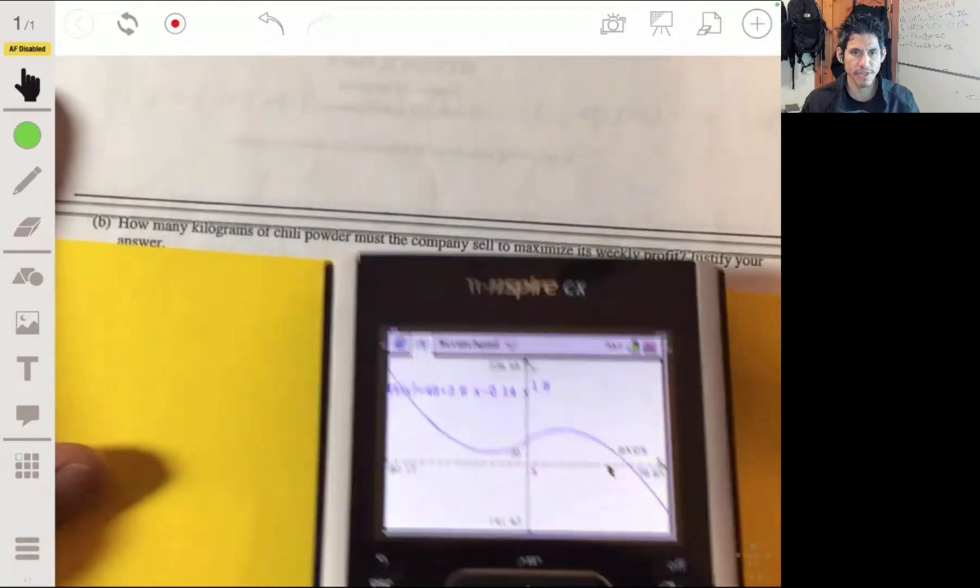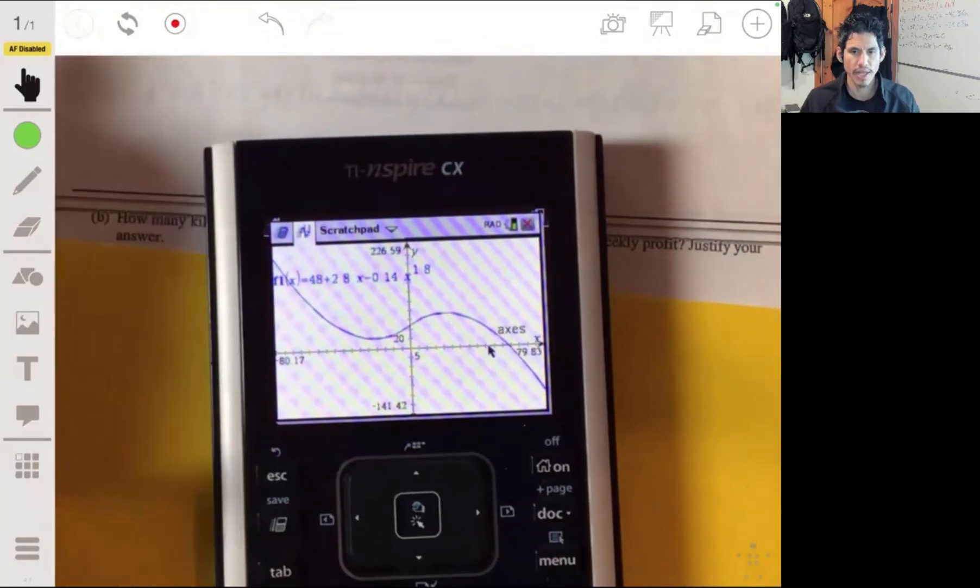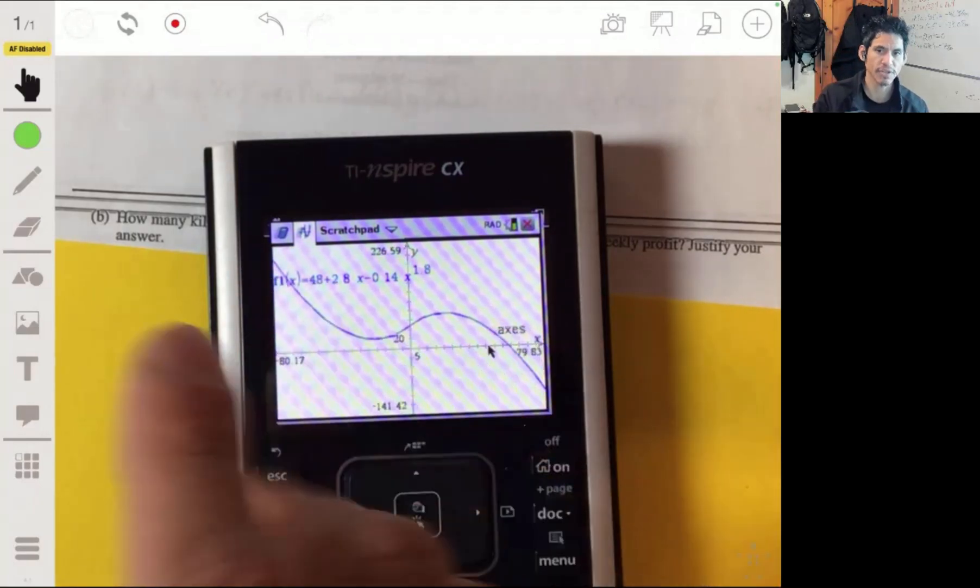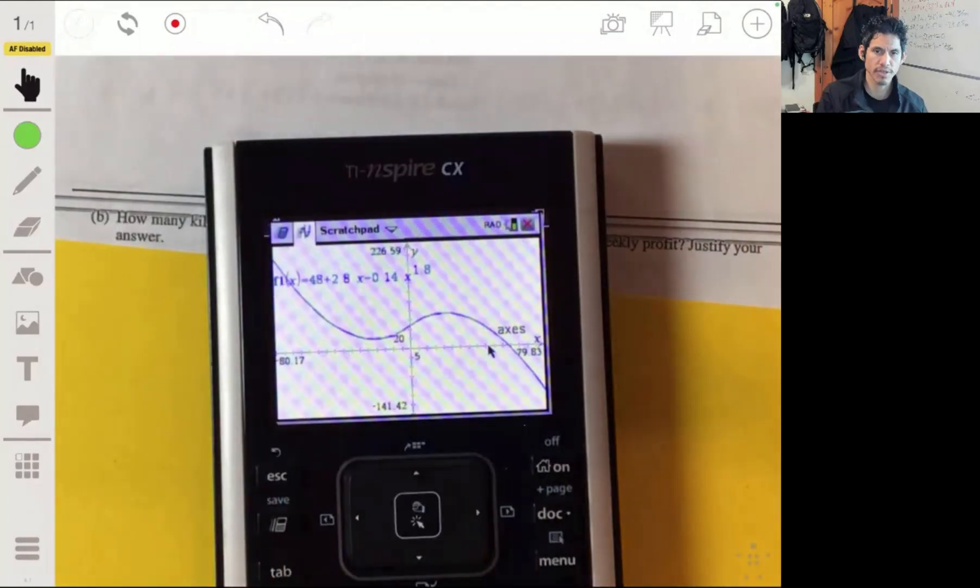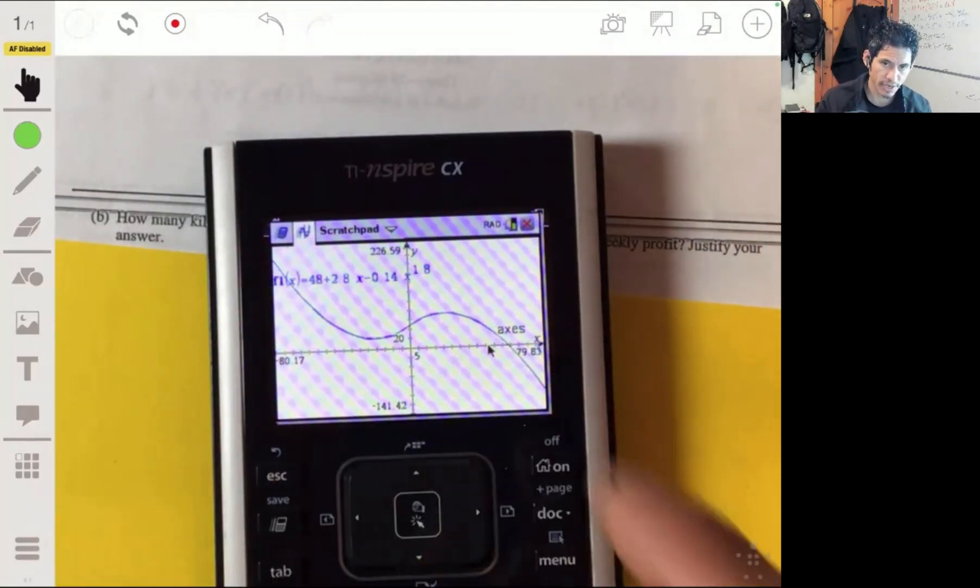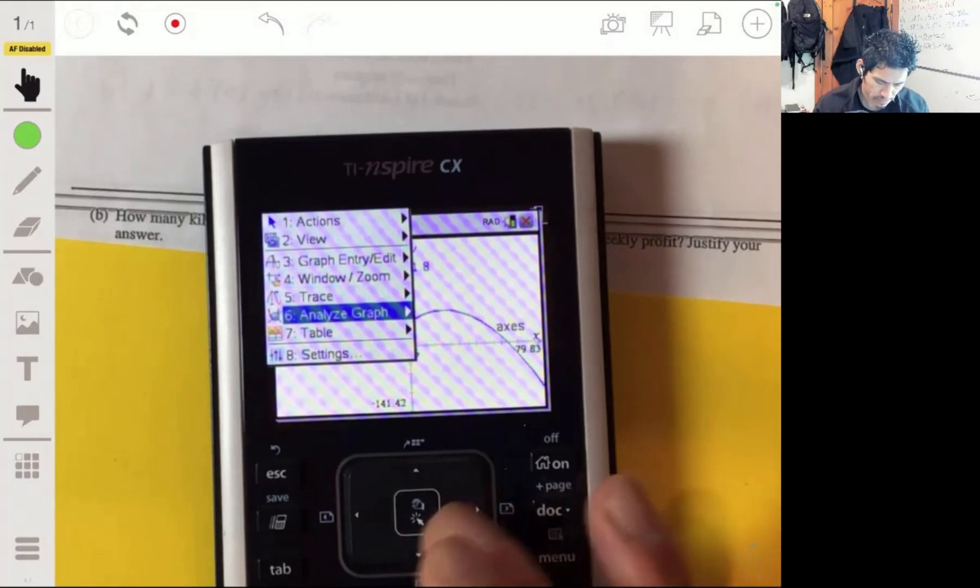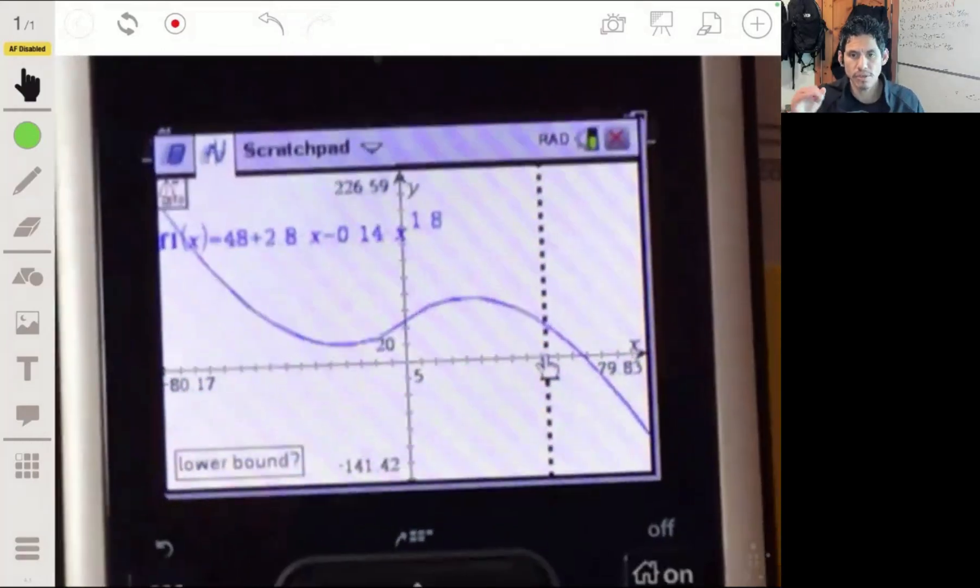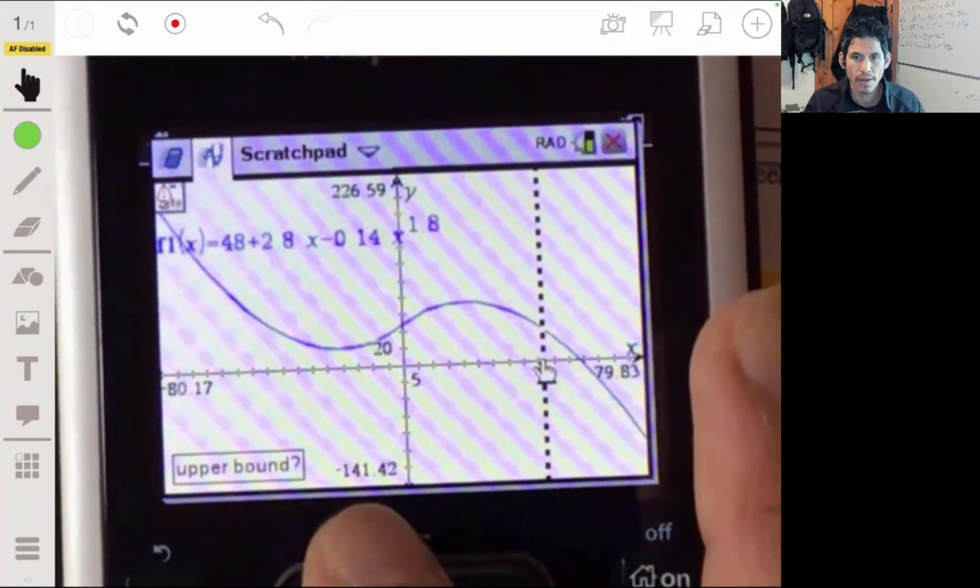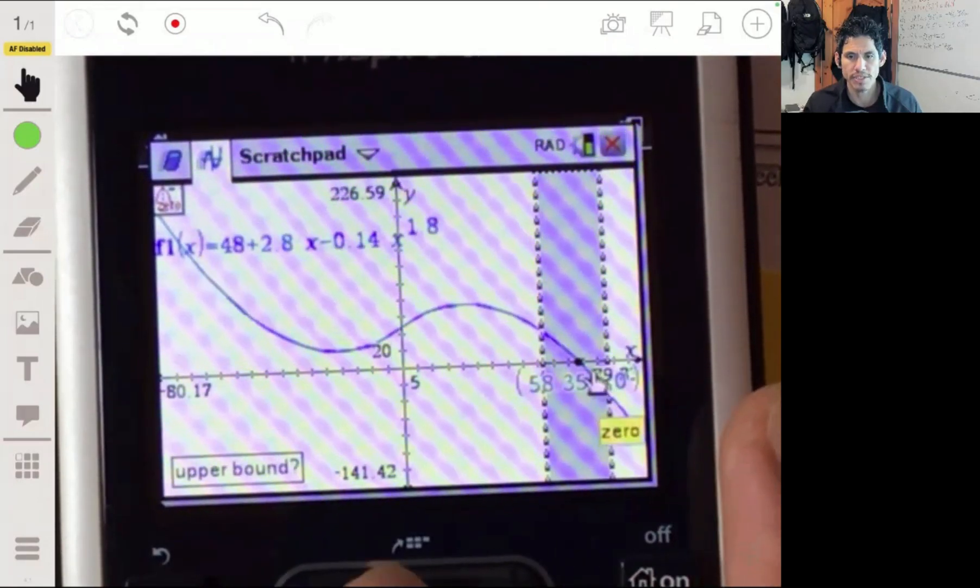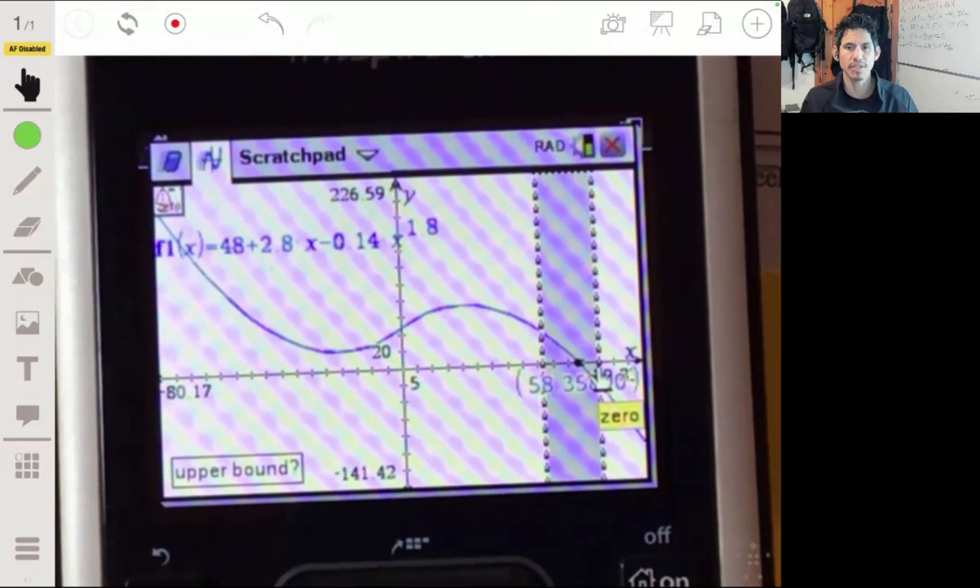I made this graph of the derivative. Remember, the derivative describes how the function is changing. Whenever the derivative is positive, the function is increasing. It doesn't matter how positive it is, as long as it's positive. About 58.358, we got a zero. That's where it levels off.